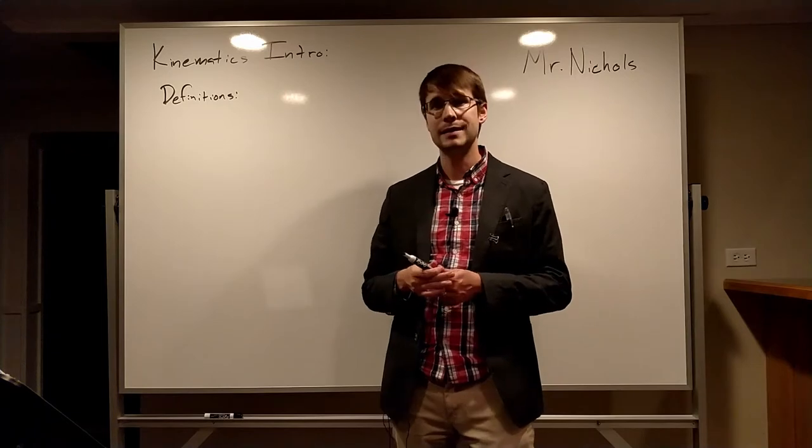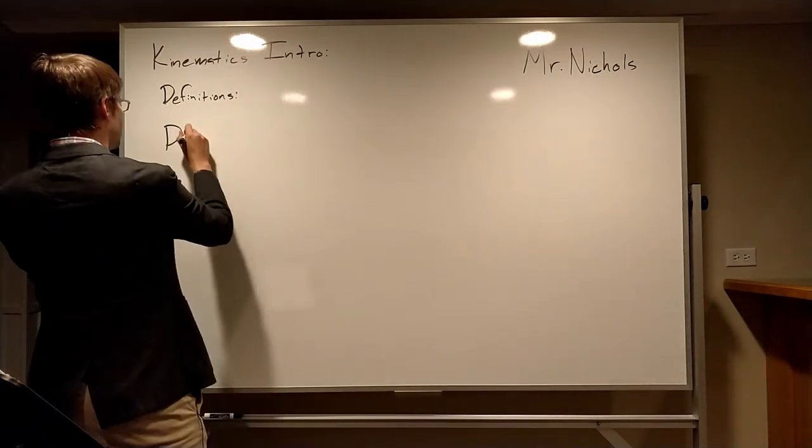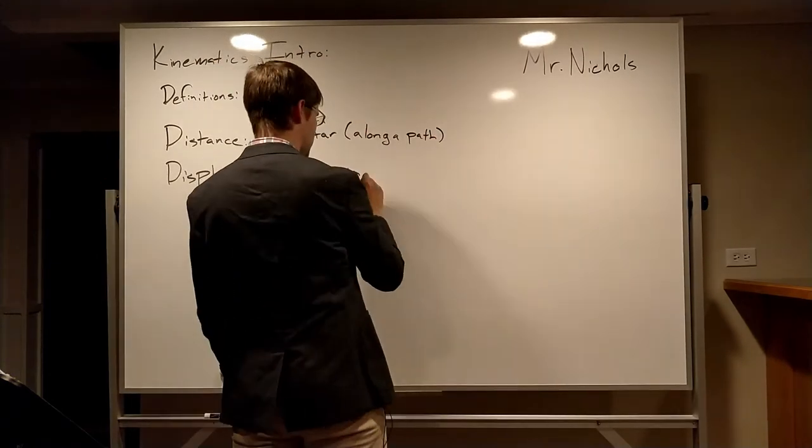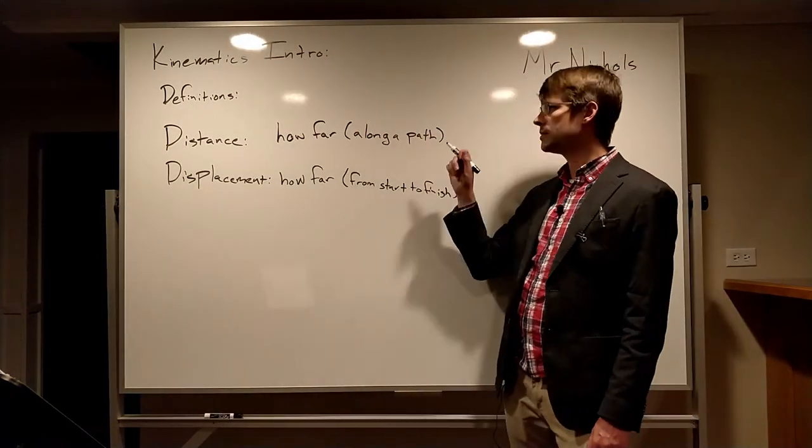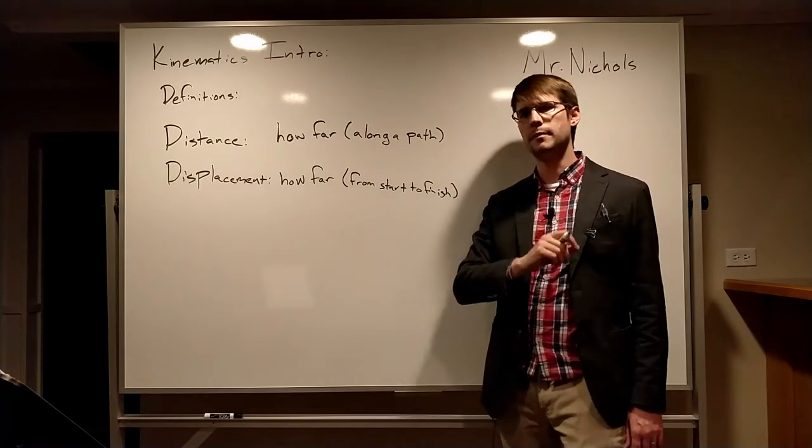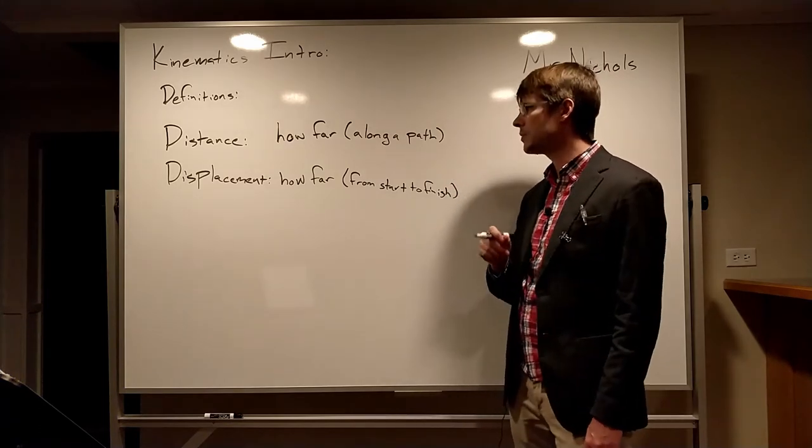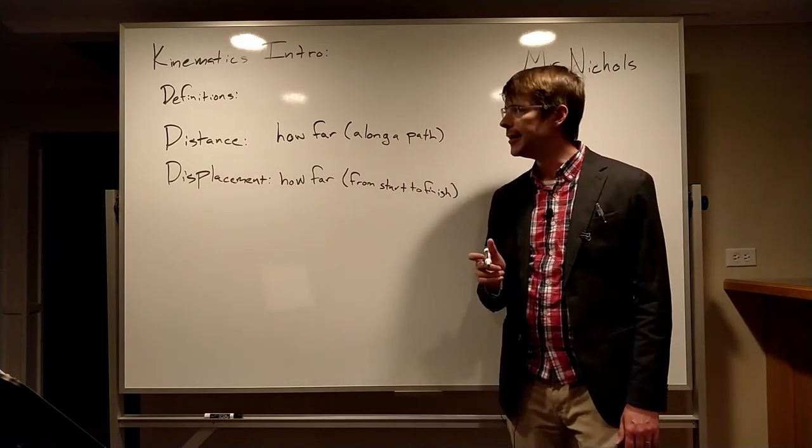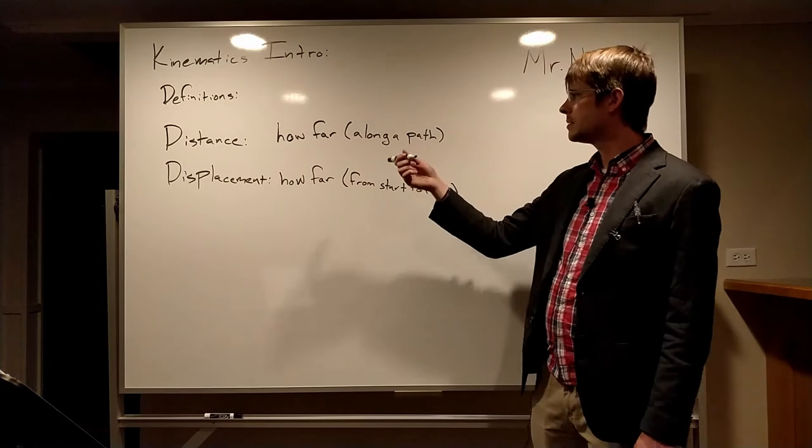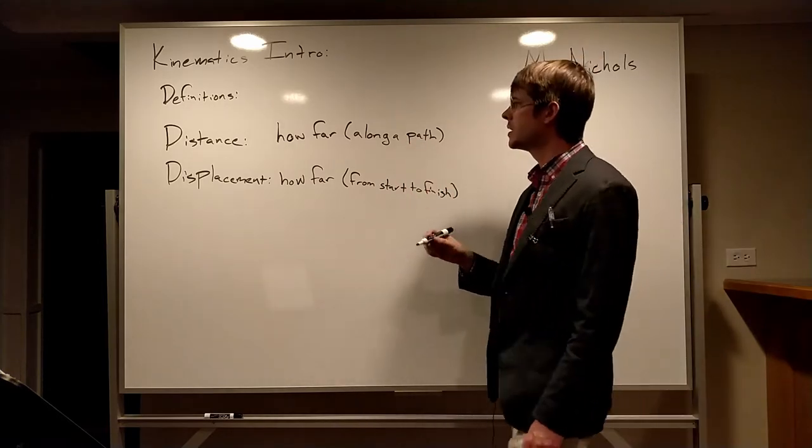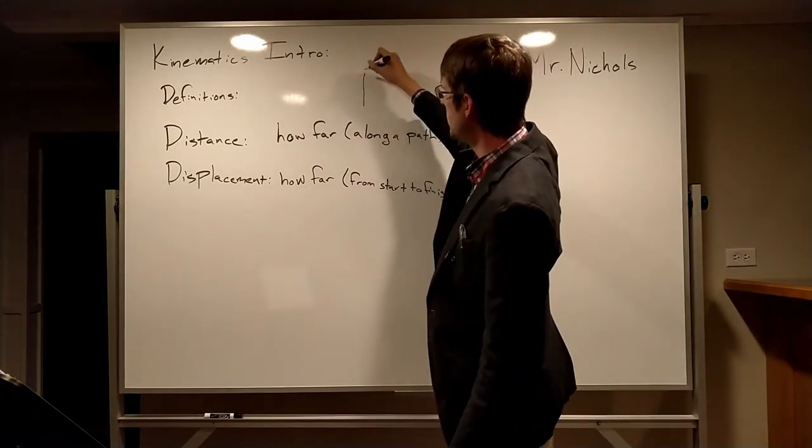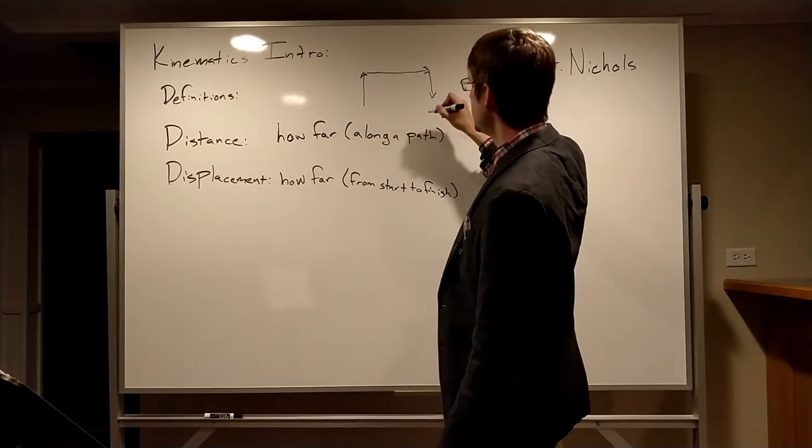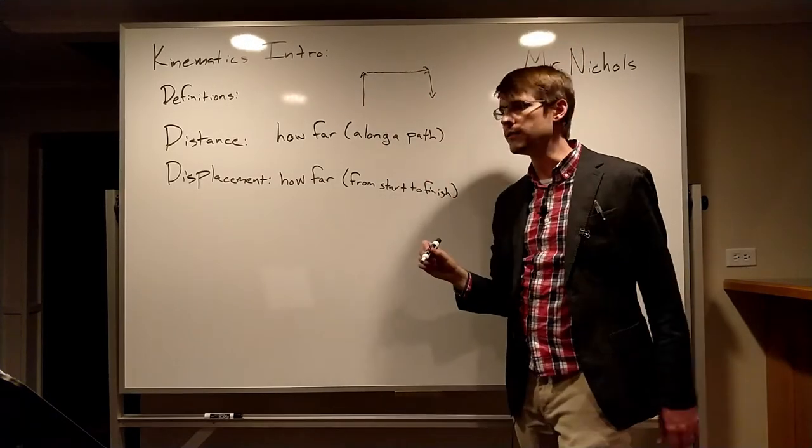To start off with, we're going to look at distance and displacement. So here's the main distinction: distance is how far along a path something has traveled. Displacement is how far from start to finish it has traveled. So to calculate distance, you just measure how long the entire path is. If somebody were to go one meter up, three meters to the right, one meter down, that would be five total meters of distance.